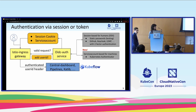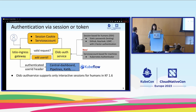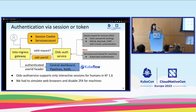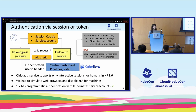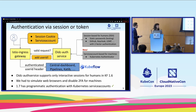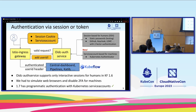Before version 1.7, the OIDC service only supported interactive sessions intended for humans, so we had to simulate web browsers for machines. Now, with 1.7, we have a programmatic way to authenticate machines using service account tokens. This was a very heavily requested feature by the users, because quite a lot of companies use GitHub workflows and GitLab pipelines to trigger Kubeflow pipelines in turn, and they definitely need long-term, proper machine-to-machine authentication.